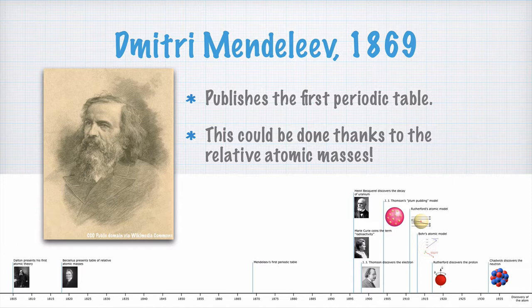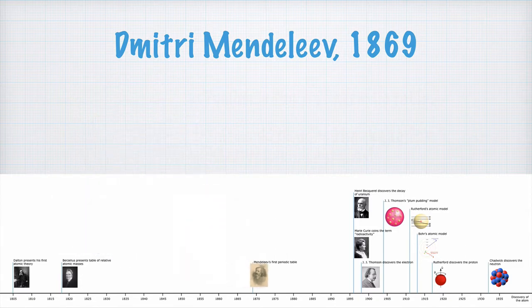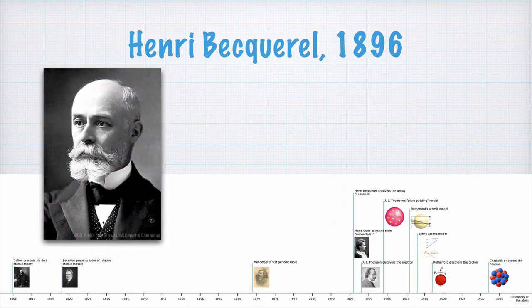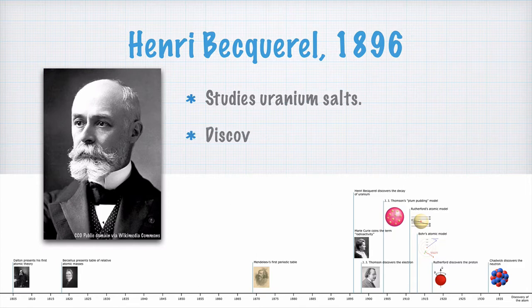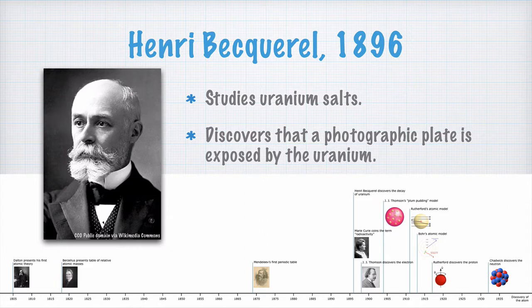Right now, we'll concentrate on the development of the atomic theory. Let's move on to 1896 and a French physicist named Henri Becquerel. He examined uranium salts and discovered that if he put them on a photographic plate, the plate was exposed, even if it hadn't been exposed to light.